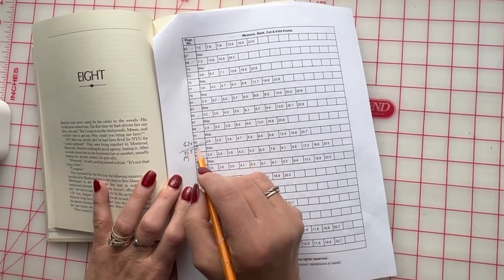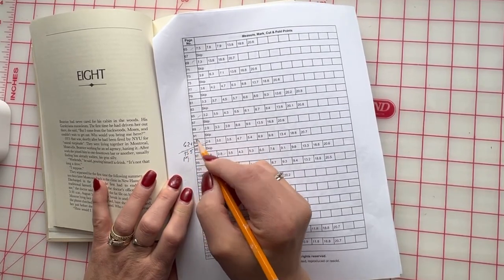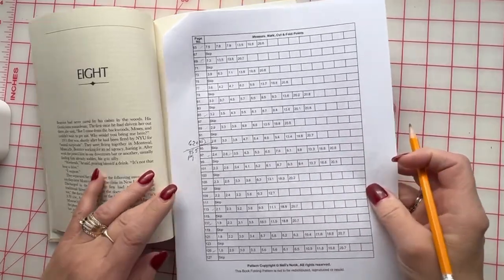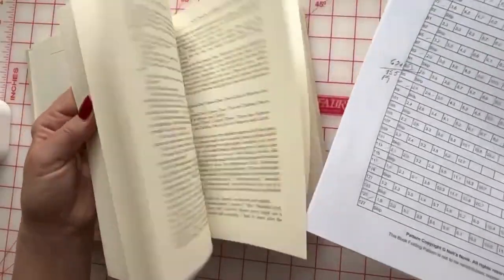So pattern page, pattern number 93 will be on book page 155, and just find 155.